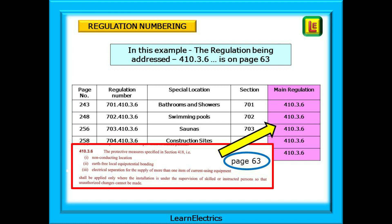If you want to see what the basic regulation is before it was modified, just chop off the section number and go to the regulation number that is left. In this example, shown here for saunas, chop off the 703 for saunas and you are left with 410.3.6. Go to page 63 in the main part of the regs and there is 410.3.6 as it was before being modified in special locations.